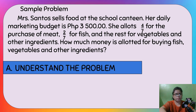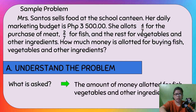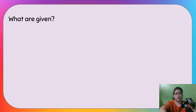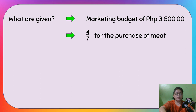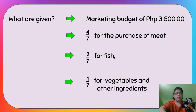How much money is allotted for buying fish, vegetables, and other ingredients? First step — understand the problem. What is asked? The amount of money allotted for fish, vegetables, and other ingredients. What are given? The marketing budget is 3,500; 4/7 is for meat; 2/7 is for fish; and the rest is for vegetables and other ingredients.